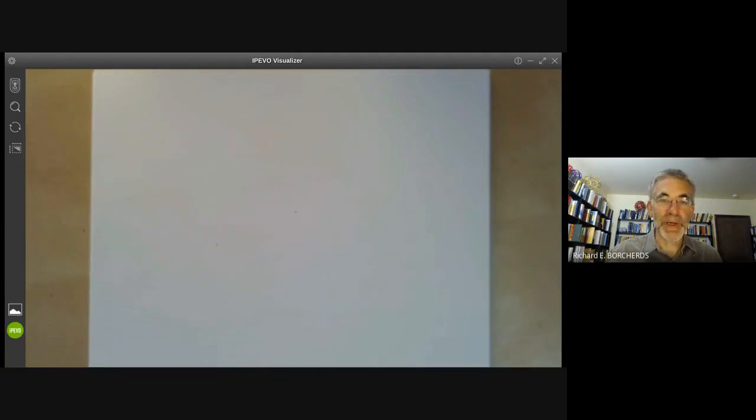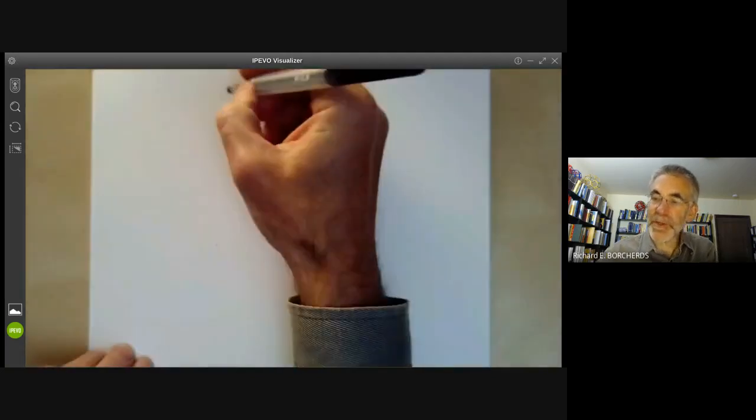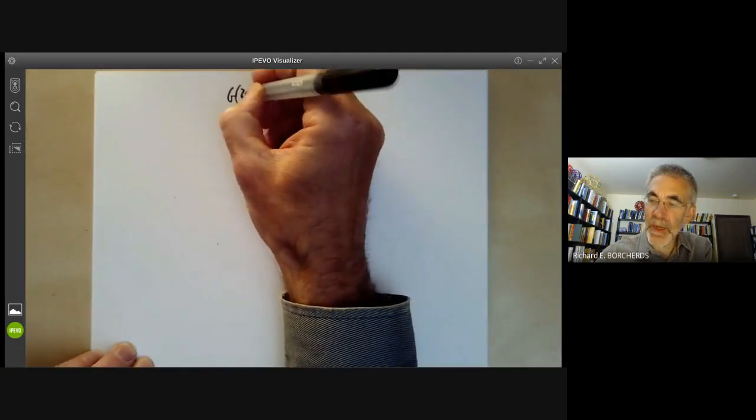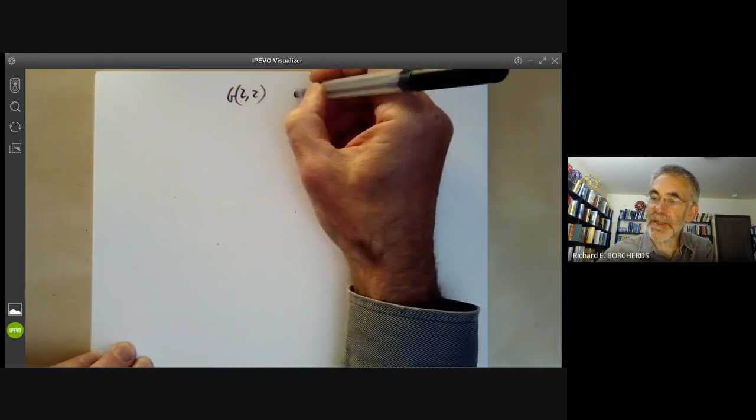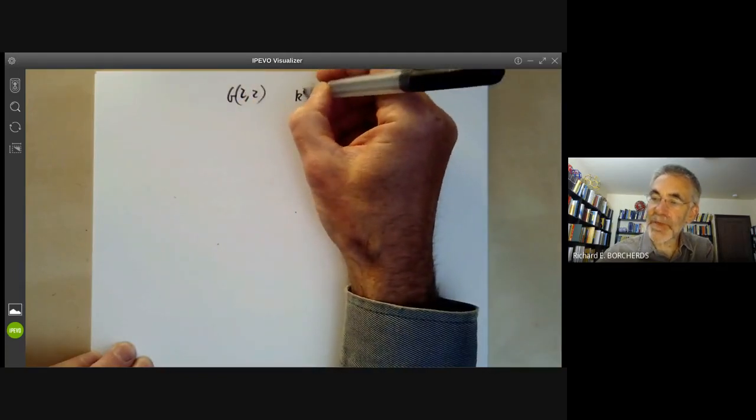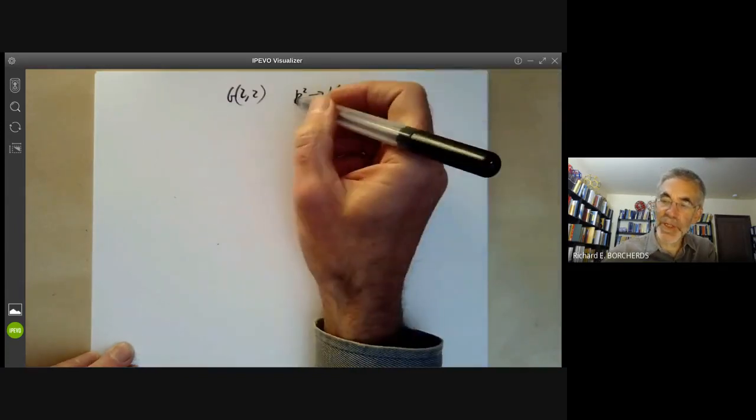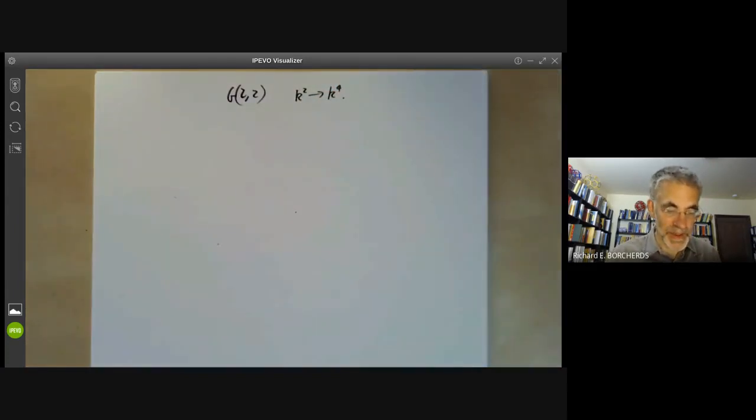This algebraic geometry lecture will mostly be about Grassmannians. In the last lecture we looked at the Grassmannian G22, which can be thought of as two-dimensional subspaces of a four-dimensional vector space or alternatively lines in space.